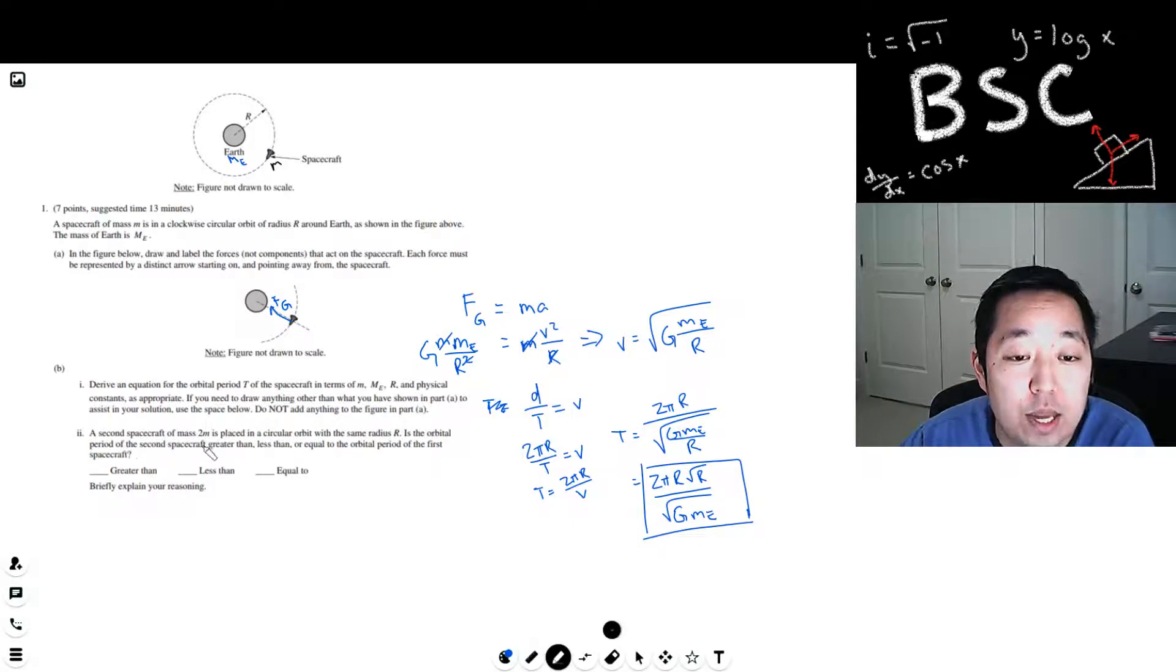The second spacecraft of mass 2M is placed in circular orbit with the same radius. Is the orbital period of the second spacecraft greater than, less than, or equal to the orbital period of the first spacecraft? Well, this is the orbital period of the first spacecraft, and note that it doesn't seem to depend on the mass of the spacecraft. I don't see M anywhere. It depends on the radius, the mass of the Earth, and G.